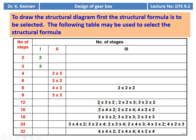The first number indicates the number of gears on the first shaft, the second on the second shaft, and the third on the third shaft. For 16 speeds: 2×4×2, 2×2×4, or 4×2×2. For 18 speeds: 3×3×2, 3×2×3, or 2×3×3. For 24 speeds: 3×4×2, 3×2×4, 3×2×4, 2×4×3, 4×3×2, or 4×2×3. In the examination, we typically design 9-speed, 12-speed, and 18-speed gearboxes.